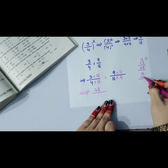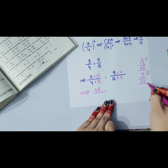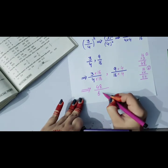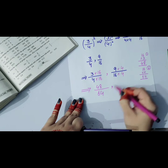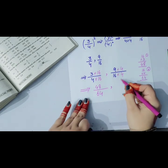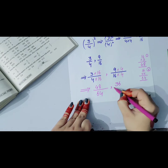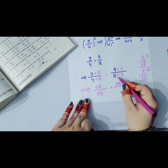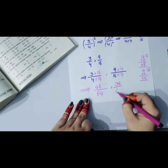For the second fraction: multiply 4 by 16 equals 64, and 9 by 4 equals 36. So we get 48 by 64 and 36 by 64.